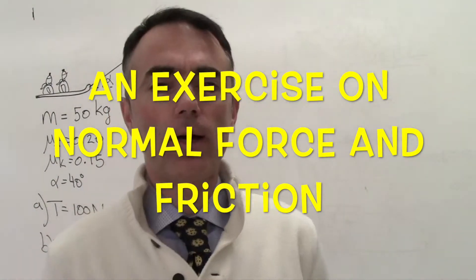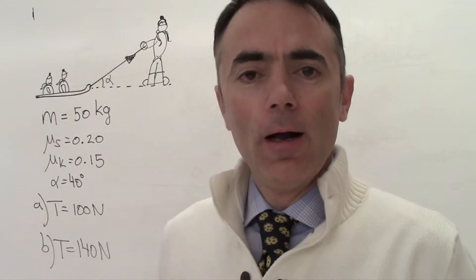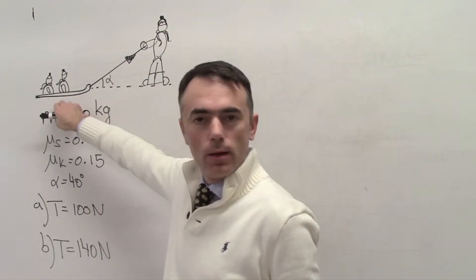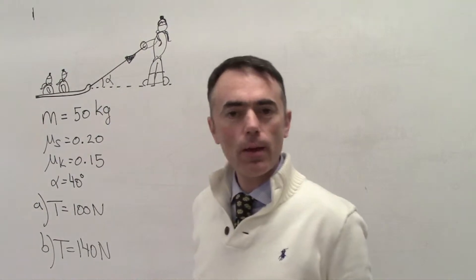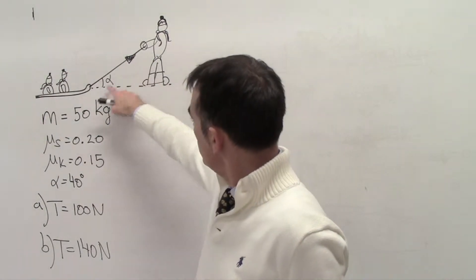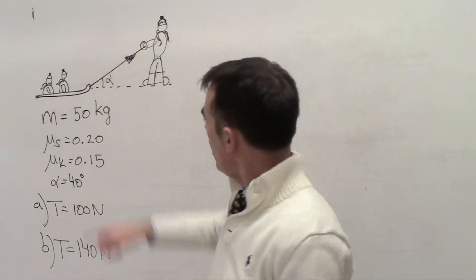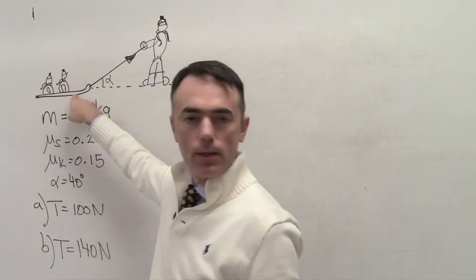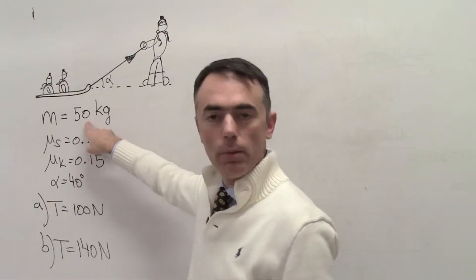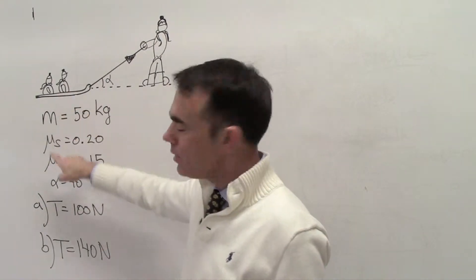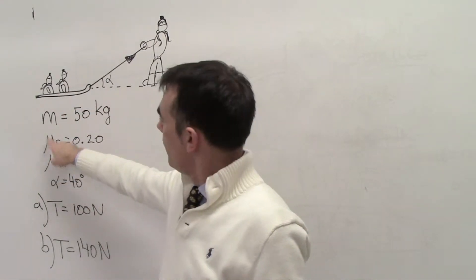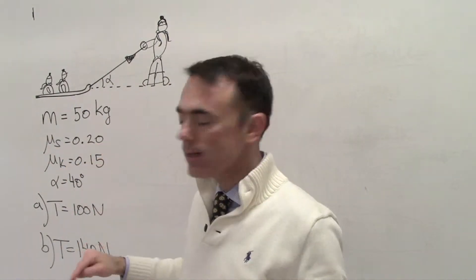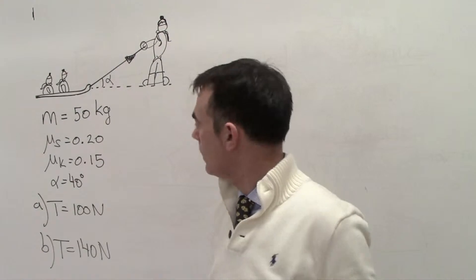Let's solve another example. Assume that we have someone pulling a slide with two kids on them, and that person is pulling the rope at an angle alpha of 40 degrees. The mass of the two kids plus the slide is 50 kilograms, and the friction coefficients between the slide and the snow are 0.20 for static and 0.15 for kinetic.